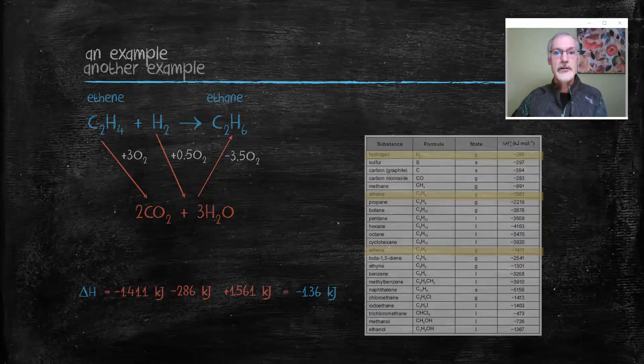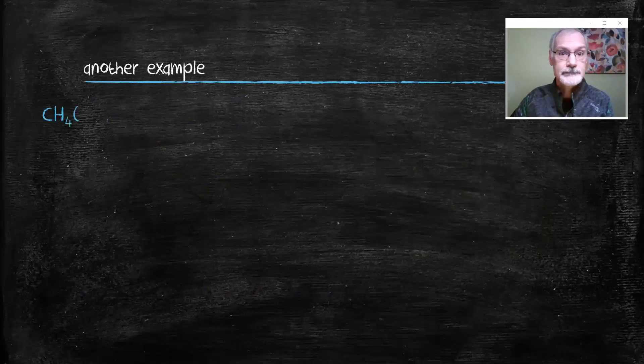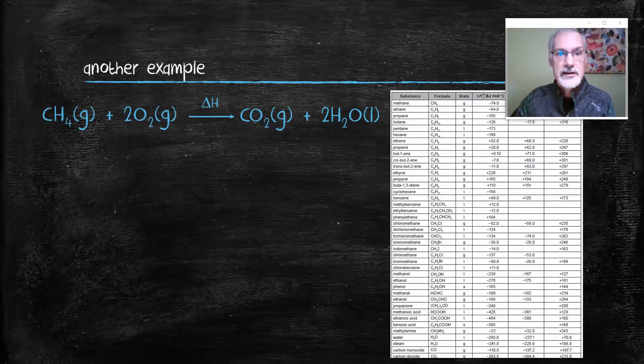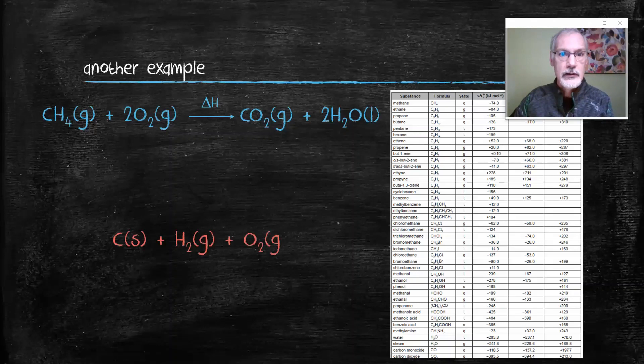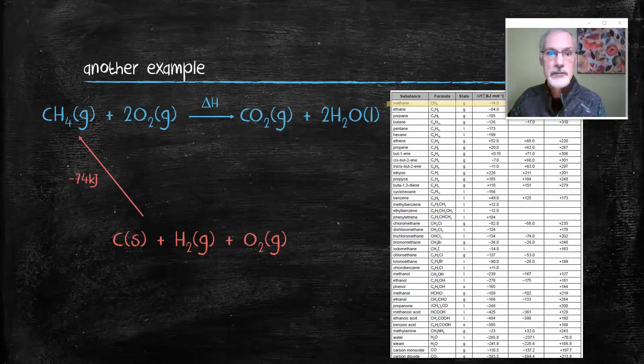Let's take a look at another example using heats of formation data. I would like to predict the heat for this reaction. Consulting the data booklet I pulled out the heats of formation table. Now remember heats of formation are the equations to make a compound from its elements at standard conditions. So in this case I've got carbon, hydrogen, and oxygen. I've listed them here in standard conditions and I have the heat for methane. So to take the carbon and the hydrogen and make methane, there's the heat associated with it.